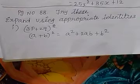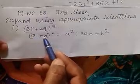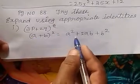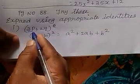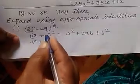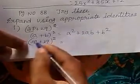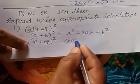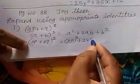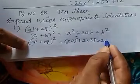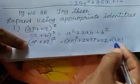First question is (3p + 2q) the whole squared. This is in the form of (a + b)² = a² + 2ab + b². So here a is 3p and b is 2q. That gives us 3p whole squared plus 2 into 3p into 2q plus 2q whole squared.